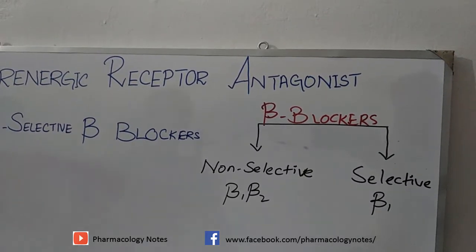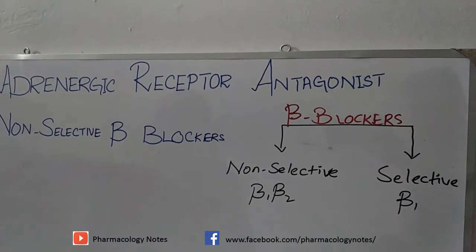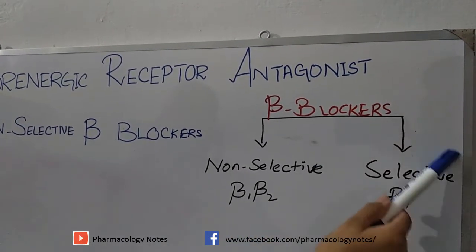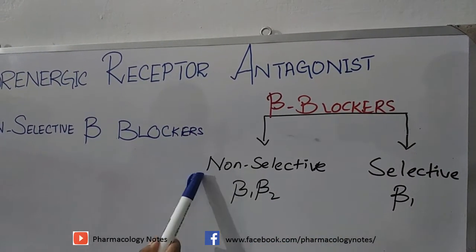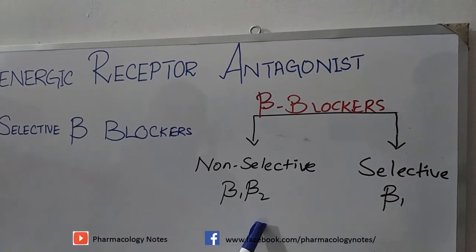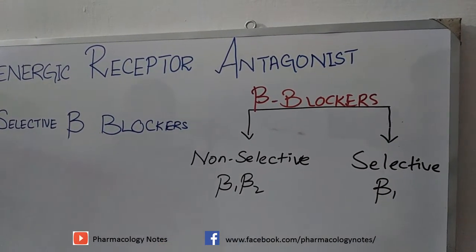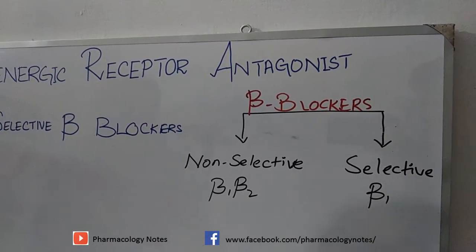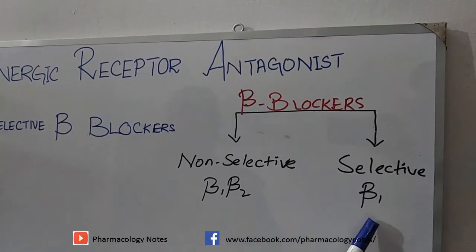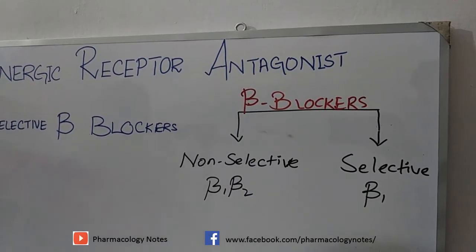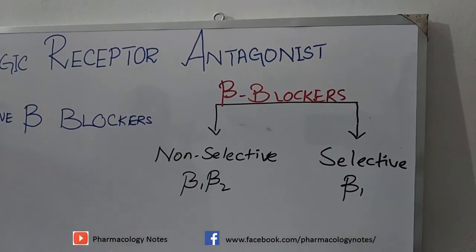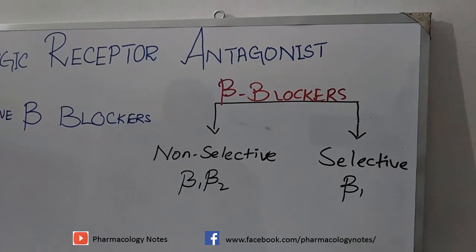Beta blockers are clinically competitive antagonists. They may act non-selectively or selectively. Non-selective beta blockers act on both beta-1 and beta-2 receptors with equal affinity, while selective beta blockers specifically act on beta-1 receptors. Drugs acting on beta-2 receptors are not used clinically and will not be discussed here.